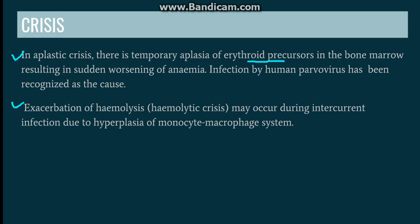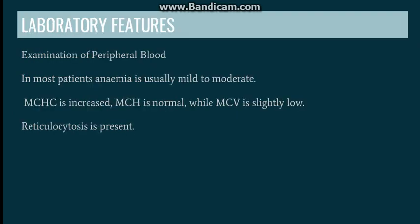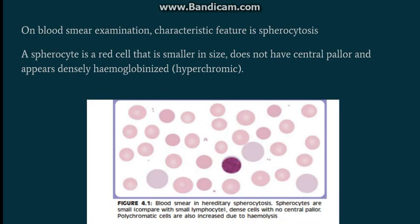Going to the laboratory investigations — we examine the peripheral blood. Hemoglobin will be low, with mild to moderate anemia. In RBC indices, MCHC will be increased, MCH will be normal, and MCV will be slightly low. Reticulocytosis is also present in hemolytic anemia. On the peripheral blood smear, the most characteristic finding is the presence of spherocytes.